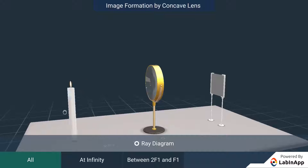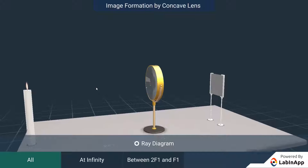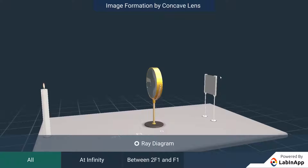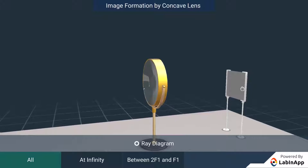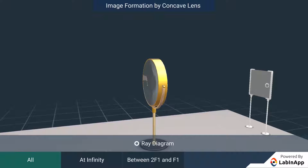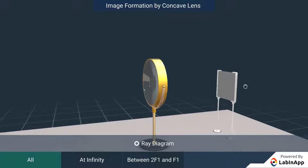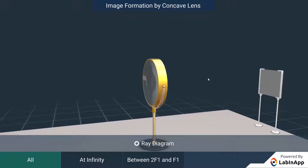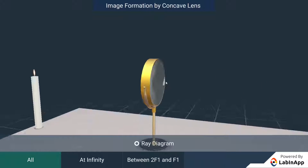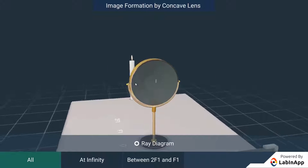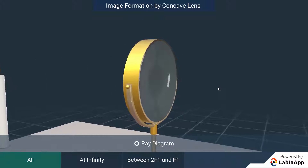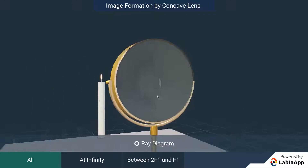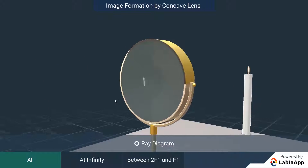We can see that the image is not formed on the screen, thus it is a virtual image. By looking from the other side of the lens, we can see that the image of the candle is smaller in size and it is erect.